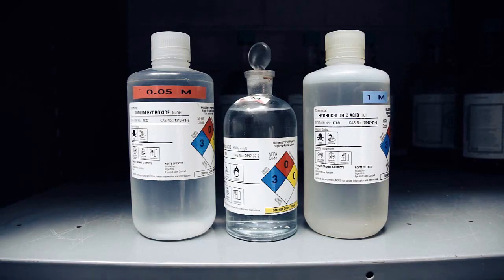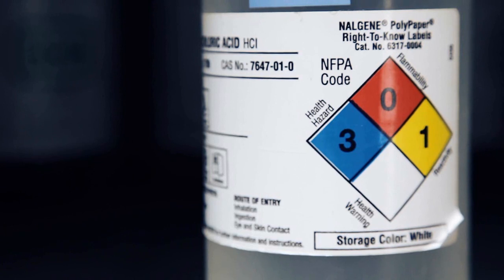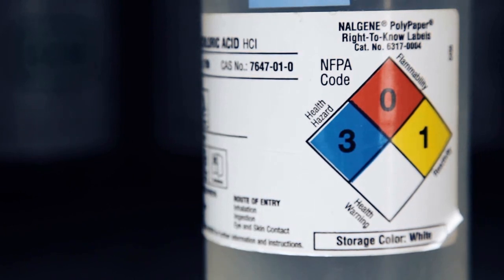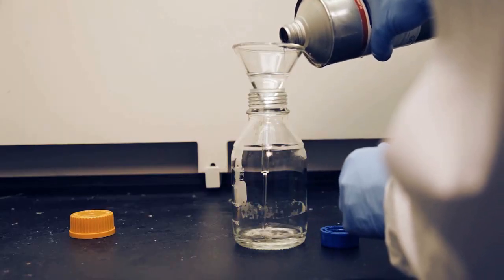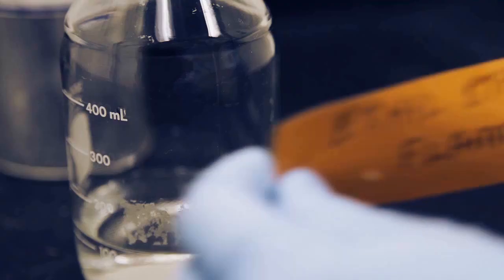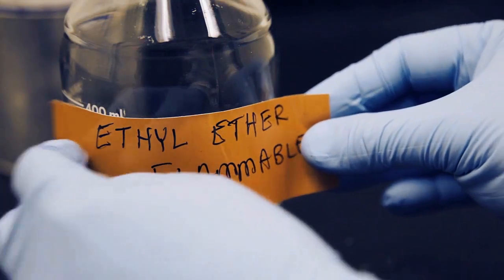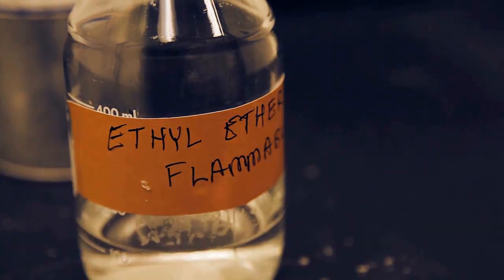Hazardous material containers must always be clearly labeled and include, at a minimum, the name of the contents in English and the health and physical hazards associated with the material. If chemicals are placed into an unlabeled container, that container must have a secondary label affixed to it. Just like other labels, the new label must also have the name of the contents in English and the health and physical hazards associated with the material.